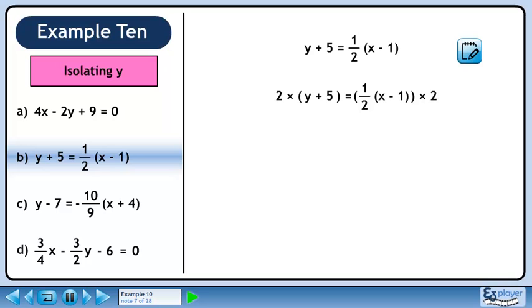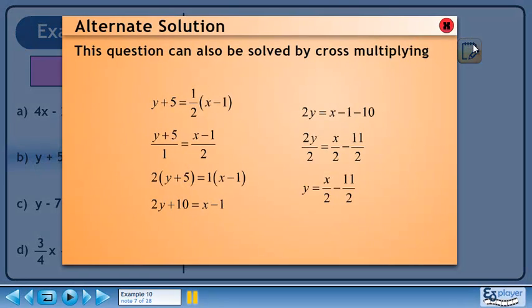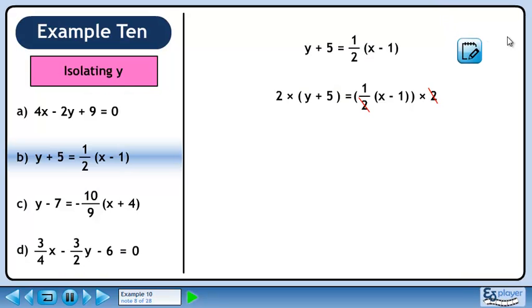There is only one denominator, 2. Multiply both sides of the equation by 2. Simplifying, the left side becomes 2y plus 10, and the right side is just x minus 1.